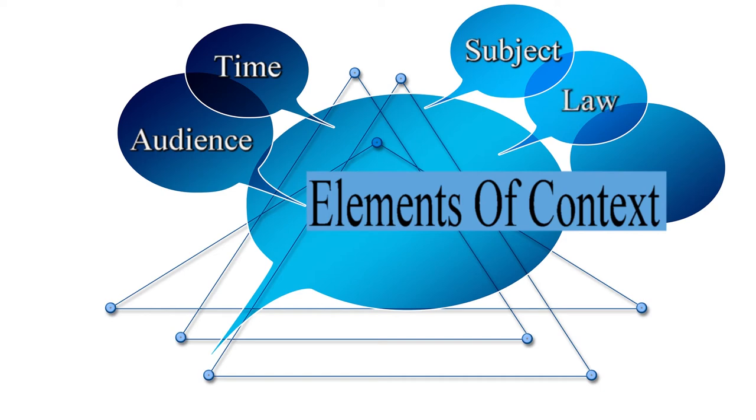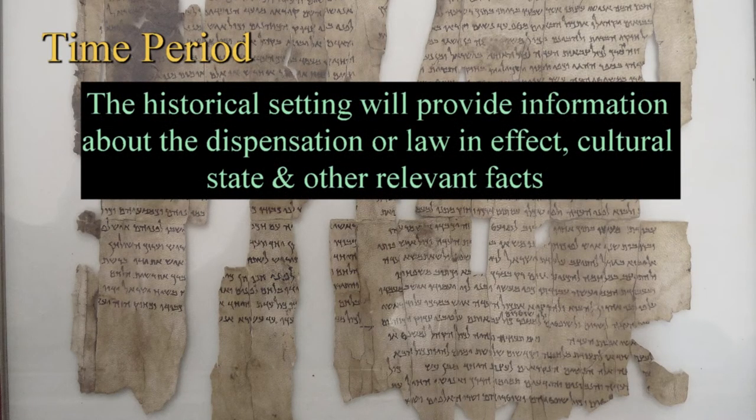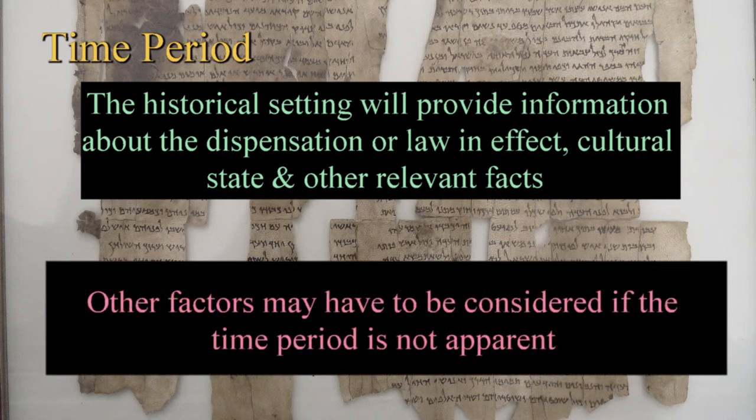Let's examine each of these elements. The historical setting in each book will provide information about the specific dispensation, the cultural state at the time, and other relevant facts. Some books are part of a chronological record, while others have to be compared to other books to determine when events took place. In a few cases, the time period can't be determined, so other factors have to be taken into consideration. Although the absence of specific information may seem confusing, the lack of specific time markers is significant.